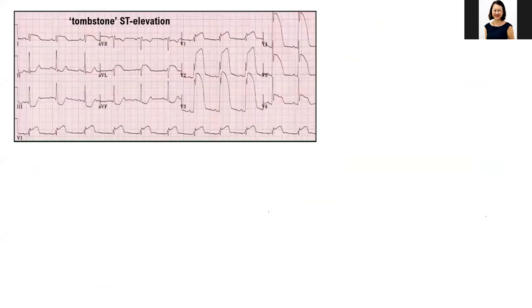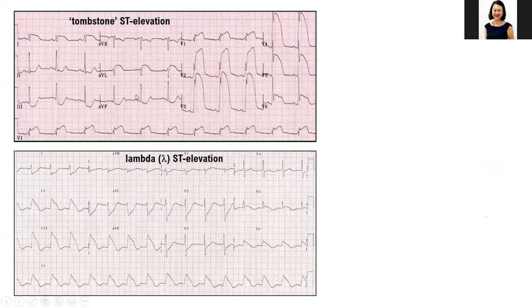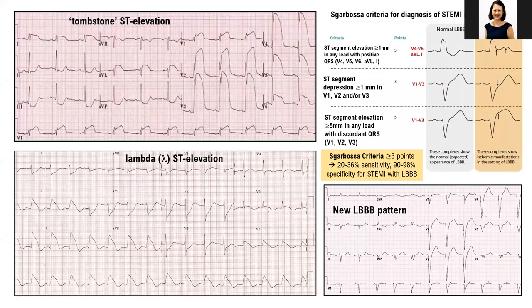Here is a typical tombstone ST elevation — very extensive with widespread reciprocal changes, which is a very bad sign. There's also the lambda pattern in the inferior leads, with inverted lambda reciprocals — also fairly widespread and quite bad. Lateral lead involvement is sometimes also seen. Left bundle branch block in the context of new chest pain should be assumed to be a myocardial infarction taking place. The Sgarbossa criteria — with more than three points based on ST elevation thresholds — helps clarify the diagnosis.